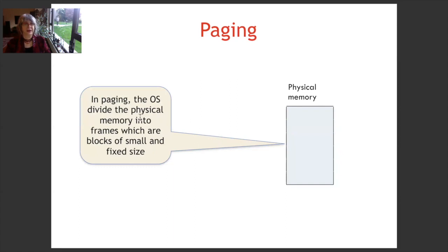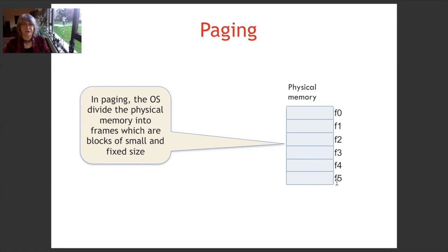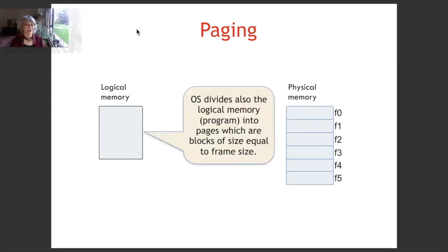In paging, the operating system divides the physical memory into frames, which are blocks of small and fixed size. In this example, in the physical memory we have frames numbered as frame 0 up to frame 5. The operating system also divides the logical memory, which is the program, into pages which are blocks of size equal to the frame size. In this example, we have a program — also called logical memory — having 4 pages, numbered from p0 to p3.